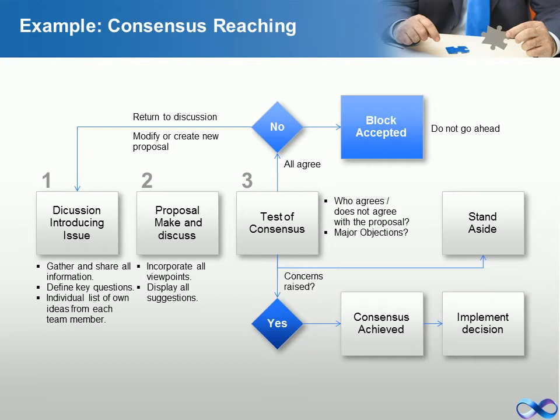The flow chart for consensus reaching is shown. Consensus reaching is a methodical way to find a collective conclusion that aids in project management, along with other tools such as expert judgment.